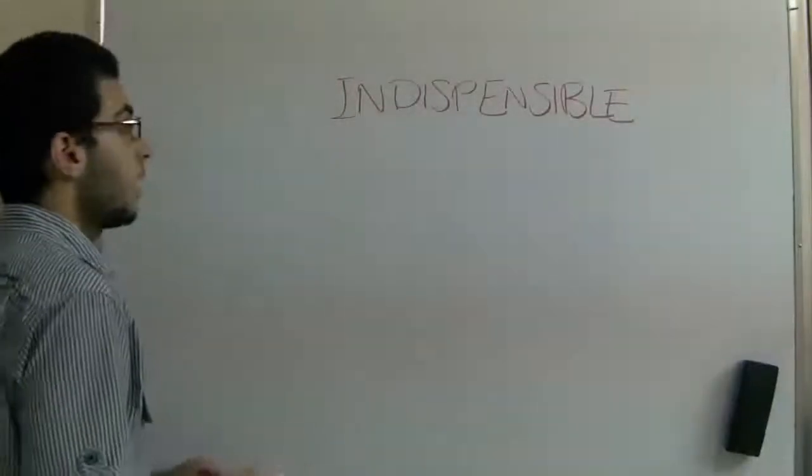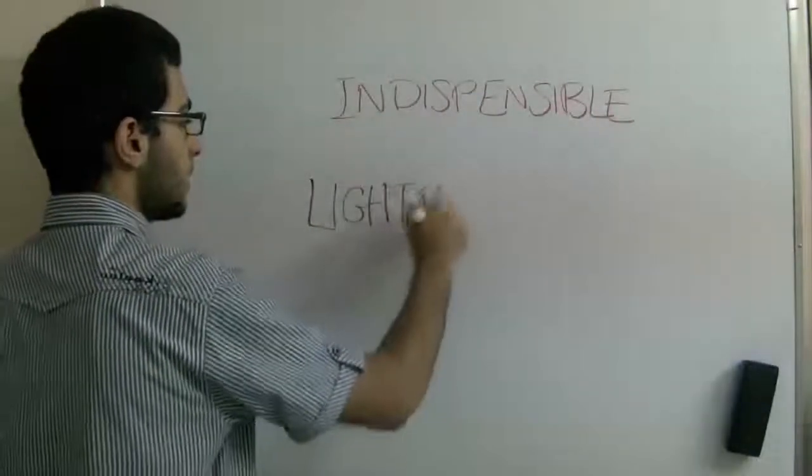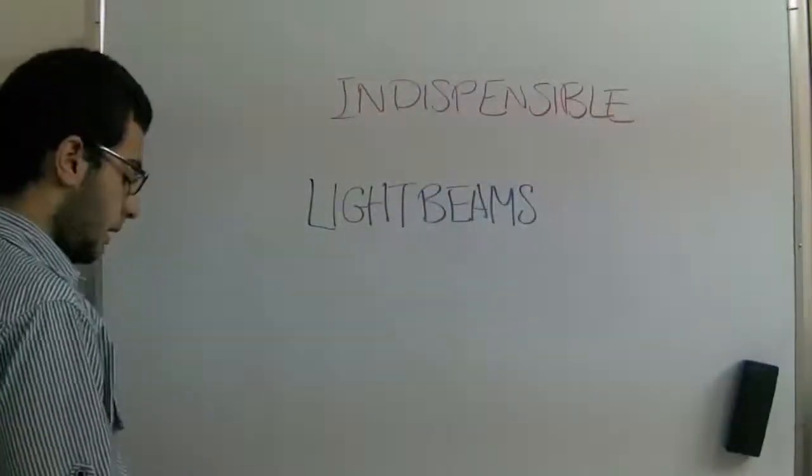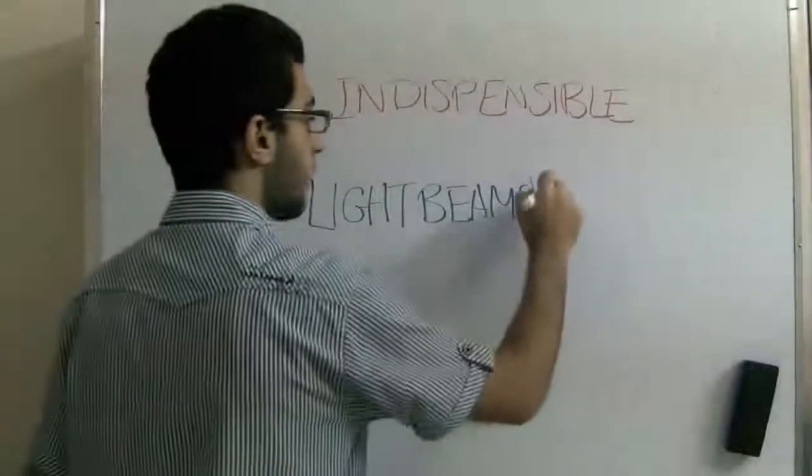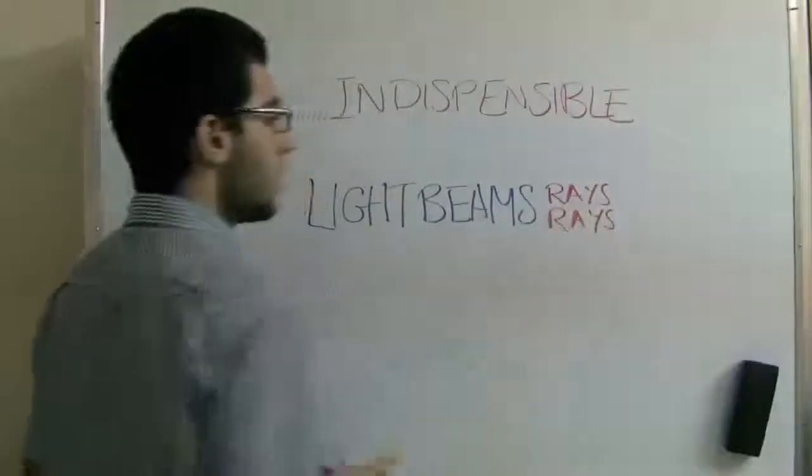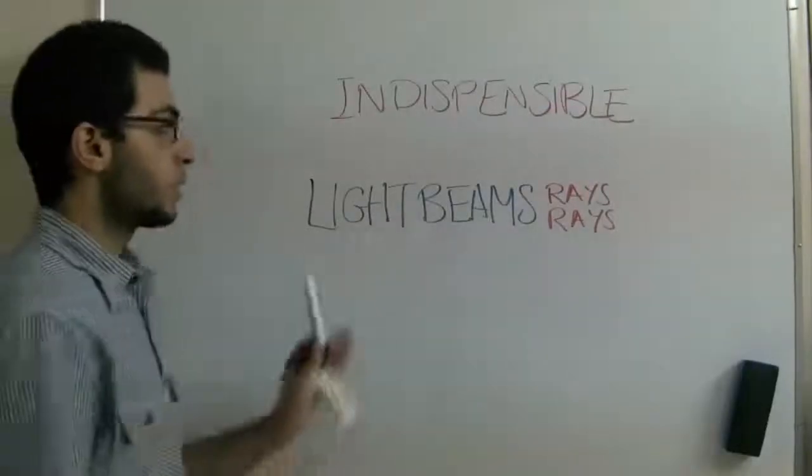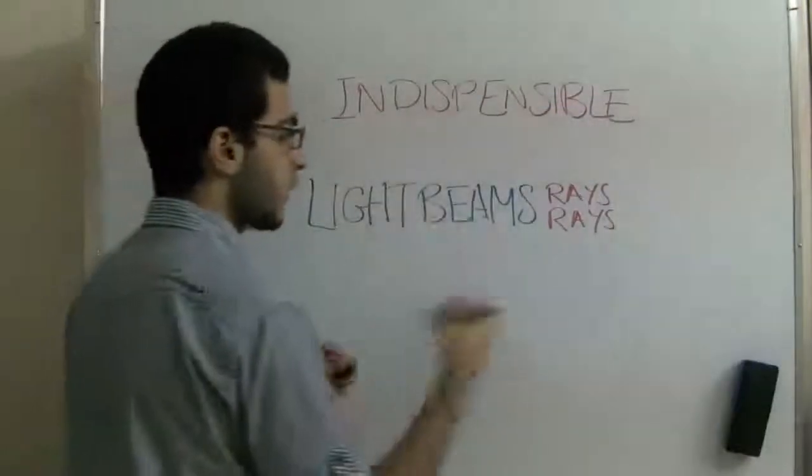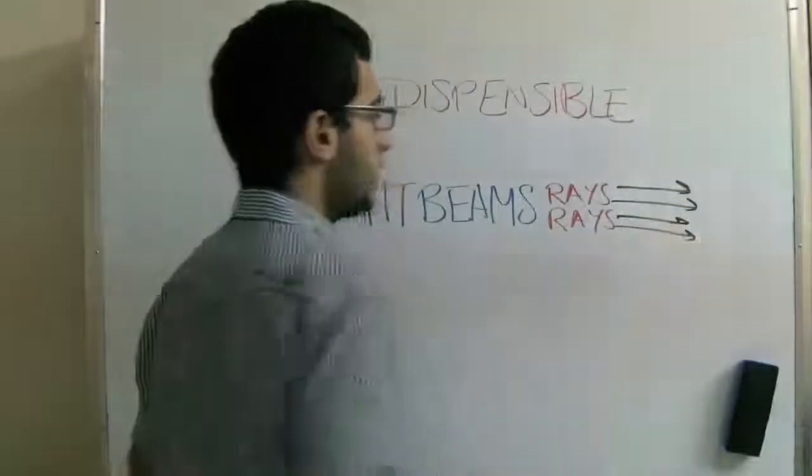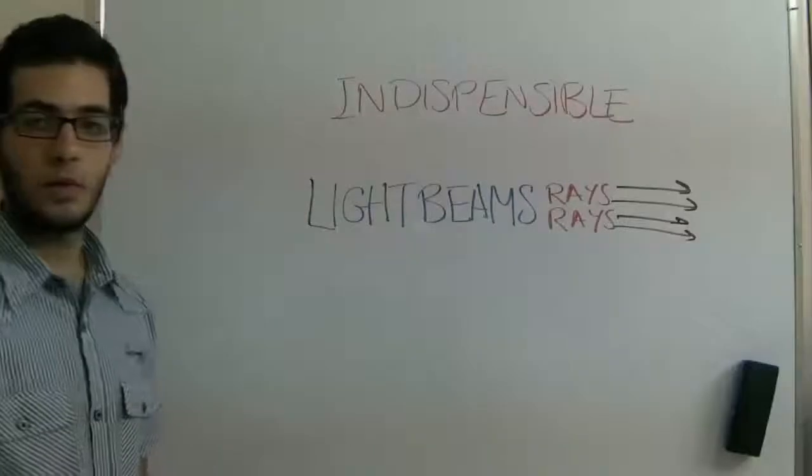Because light actually travels in light beams, and each light beam contains a group of rays. So the light ray is the unit of the light. The rays travel in straight lines. That's why light is considered as an indispensable form of energy.